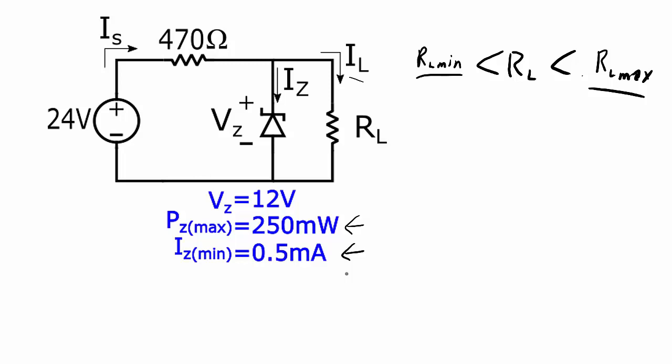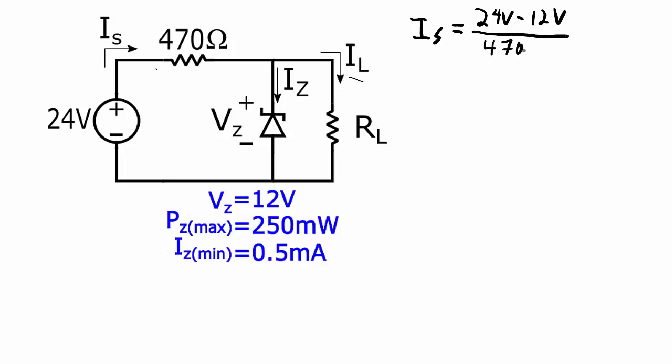So let's go through the calculations that we need to do in order to figure out what the range for the load resistor can be. So for this circuit, no matter what, if we are in regulation, the voltage across the zener diode will be 12 volts. That means we can figure out what the voltage across the 470 ohm source resistor has to be. That current coming out of the source will be equal to the voltage across that 470 ohm resistor, which will be the 24 volt source minus the 12 volts of the zener, divided by 470 ohms. And that works out to 25.5 milliamps.